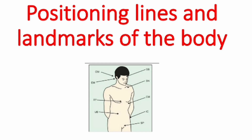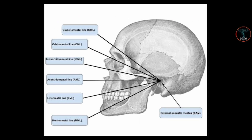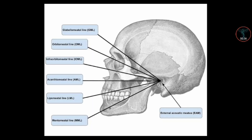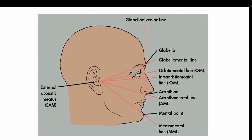Now take a look at the various positioning lines of the skull. Our first line is the GML, or the glabellomeatal line. It is an imaginary line that extends from the glabella to the center of the external auditory meatus. You can see it here — the line which passes through the glabella to the external auditory meatus is known as the GML.